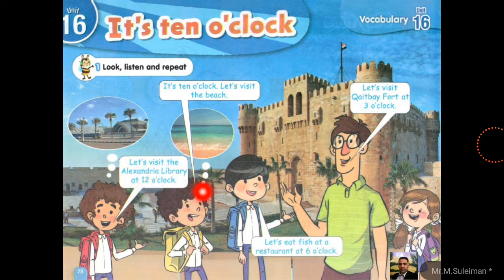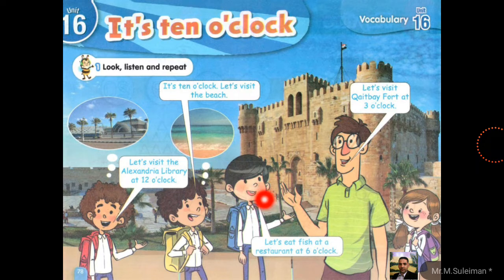Number three: let's eat fish at the restaurant at six o'clock. Remember: let's plus main verb — let's eat. We can't say 'let's eating.' We should say 'let's eat.' Time here is six o'clock.